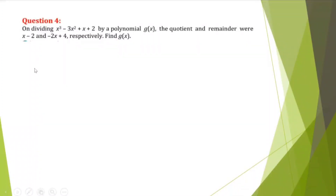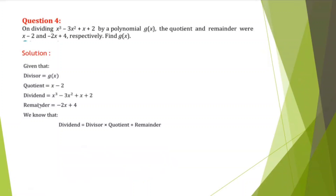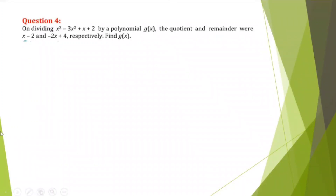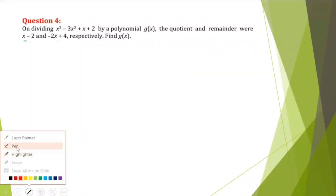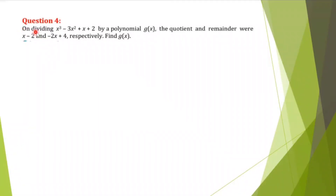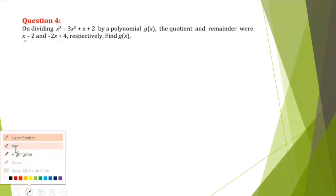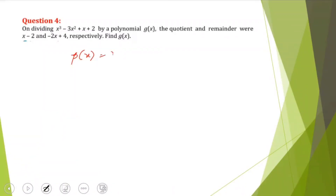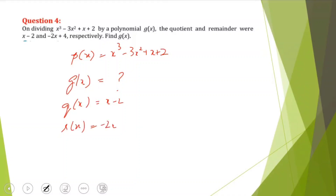One way is to show the answer directly; the other way is to show how the answer is coming. In the lower left corner of the slideshow, you'll see icons — move your cursor there and click on the pen sign to open the pen. Using the laser pointer I can read out the question: dividing the polynomial PX. Then using the pen I can write: GX is given by X³ minus 3X² plus X plus 2, I'm dividing by GX to be found out, getting quotient QX equal to X minus 2, and remainder RX equal to minus 2X plus 4. These are the details and I can show the solution this way.